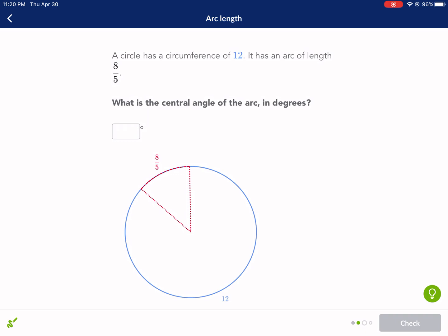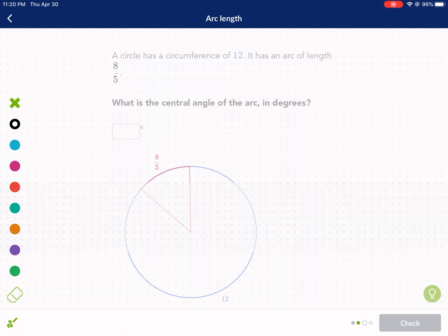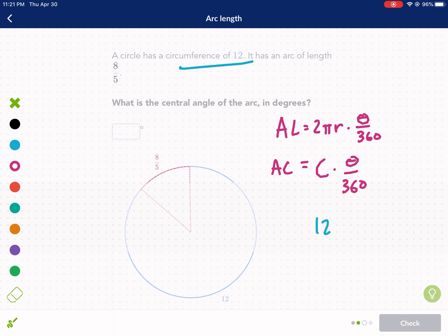A circle has a circumference of 12. It has an arc length of 8 over 5. What is the central angle of the arc in degrees? So this is a great problem, because it's making us solve for one of the variables in our equation. We already know that arc length equals 2 pi r times theta over 360. The more you write it, the more you understand it. Or we can write that arc length equals circumference times theta over 360. Theta being our central angle. So what are our givens? Well, we're given that their circumference is 12, so we'll put that in. 12 equals. We're also given, let's make this more of an L.